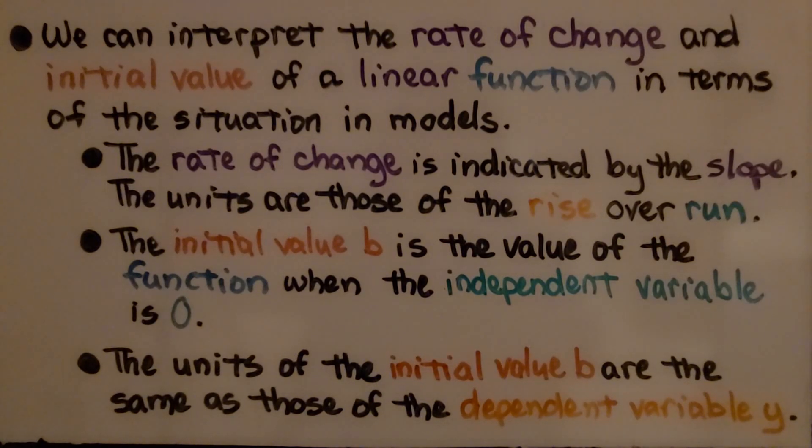The rate of change is indicated by the slope. The units are those of the rise over run. The initial value B is the value of the function when the independent variable is zero. The units of the initial value B are the same as those of the dependent variable Y.